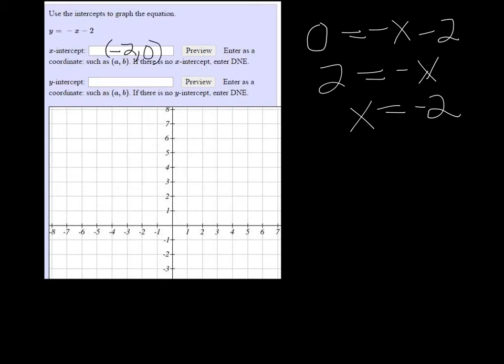For the y-intercept, I need to plug 0 in for x, so it's negative 0 minus 2. So y equals negative 2 as well. So we get 0, oops wrong color, 0, negative 2.